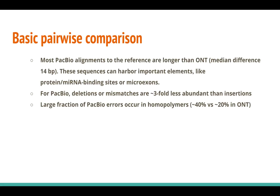We compared sequencing errors and internal structure in identified read pairs. PacBio expectedly showed much higher qualities than ONT reads. Most PacBio alignments to the reference were slightly longer, although the difference was small — up to 14 base pairs. ONT has significantly more errors than PacBio, but a large fraction of PacBio errors occur on homopolymers, while ONT errors frequently arise from other areas.